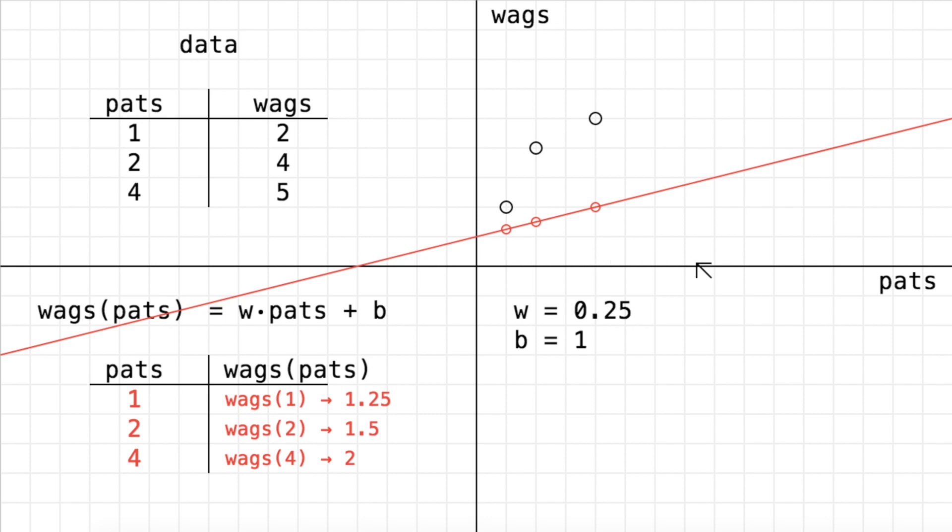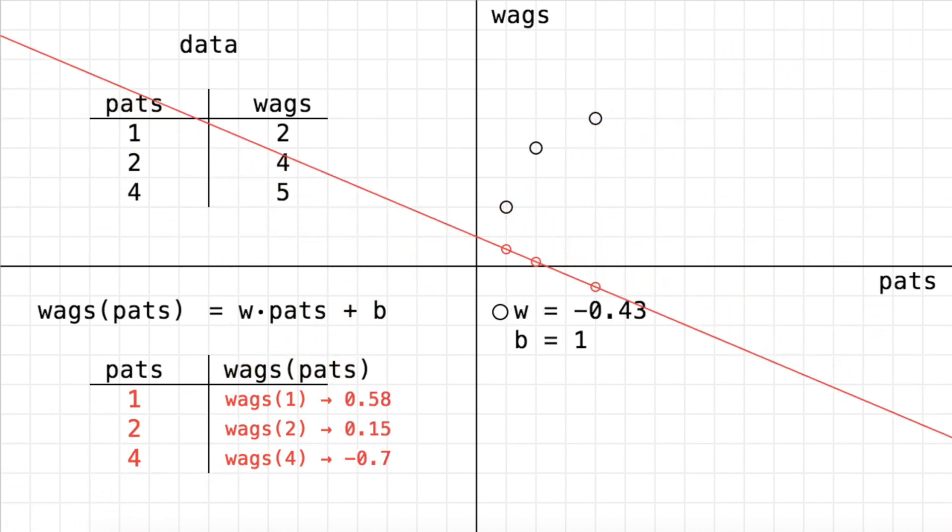Now as pats increases, our line is going to slope upwards based on whatever w is. So w is the slope of our line. And you can see as I change w, we can slope our line downwards or upwards.